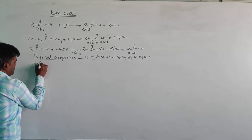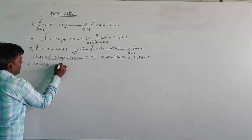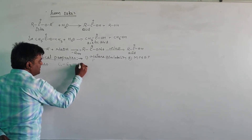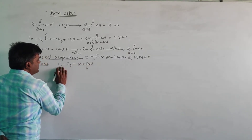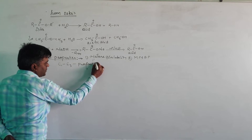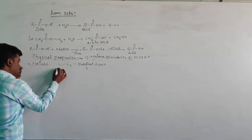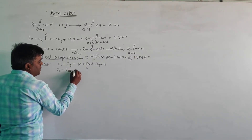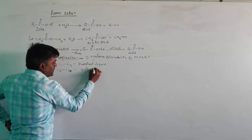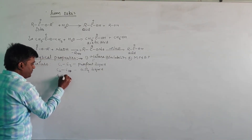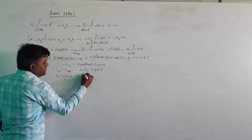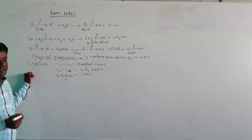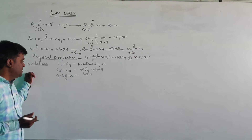Let us see the nature of carboxylic acid. From C1 to C3, these are pungent liquids. From C4 to approximately C10, these are oily liquids. The higher members are solid in nature.